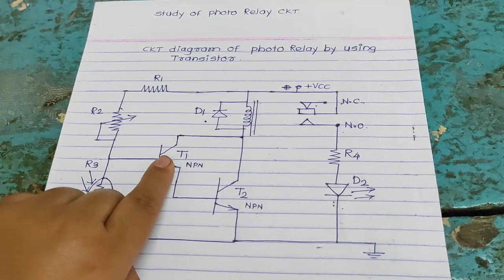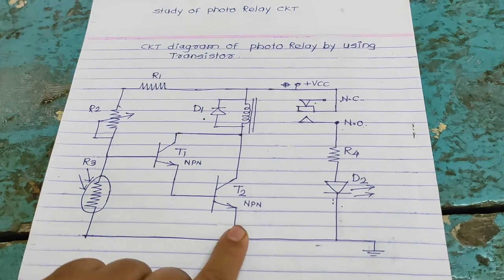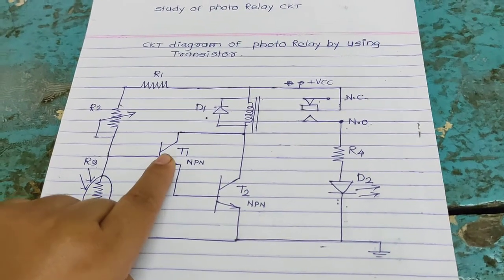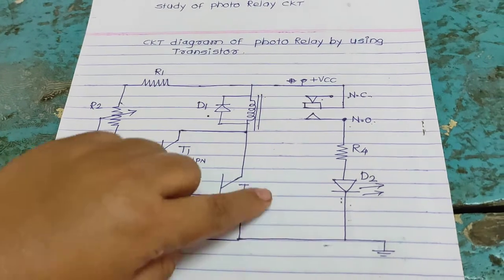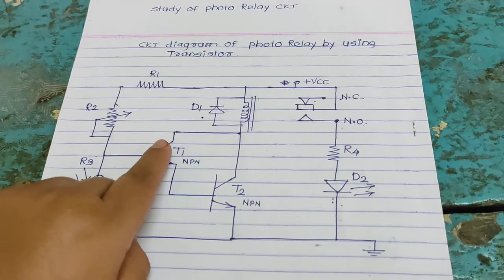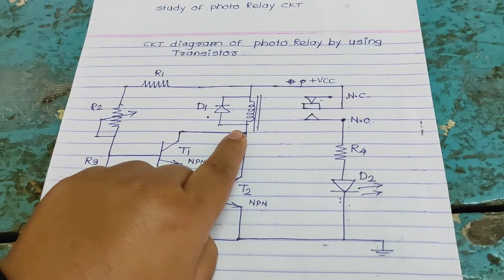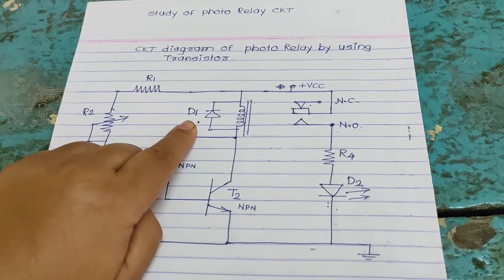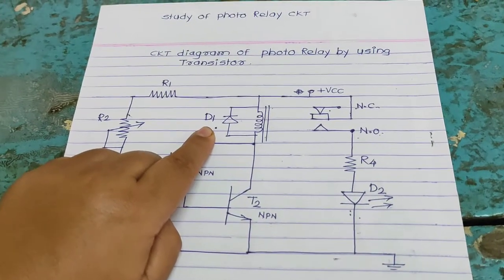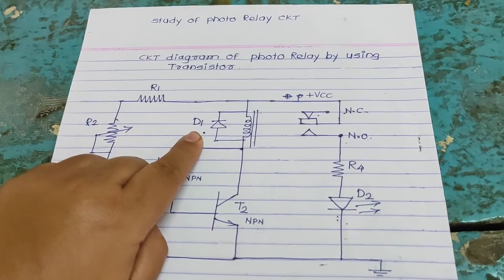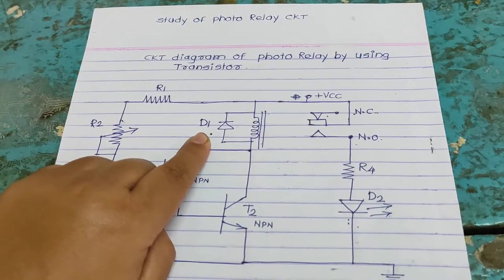Transistor T1 is on, that time T2 also on. Transistor T1 is off, that time T2 also off. Both transistors collector terminal is connected to relay coil. And diode D1 is connected across relay in reverse bias condition to avoid back EMF.